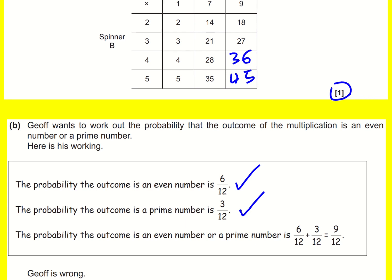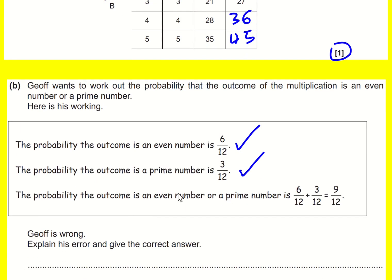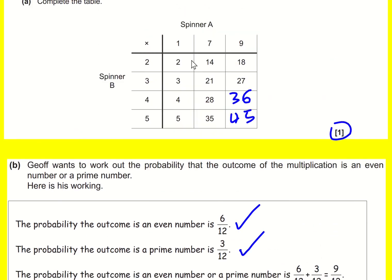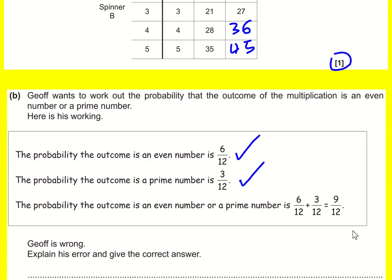So I've sort of jumped ahead to explain why he went wrong. And actually he's counted 2 twice, because 2 is an even number and 2 is a prime number.